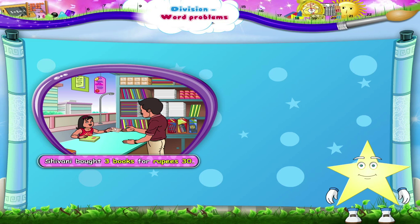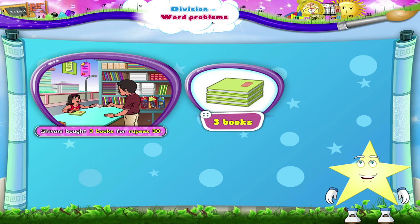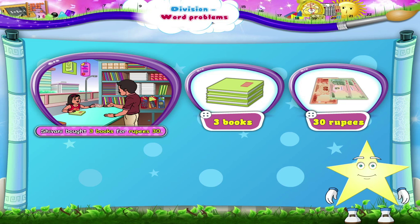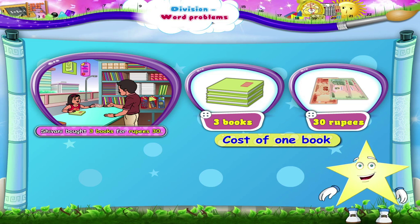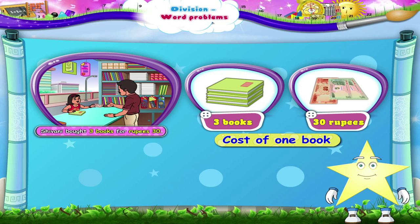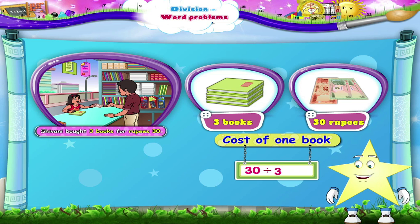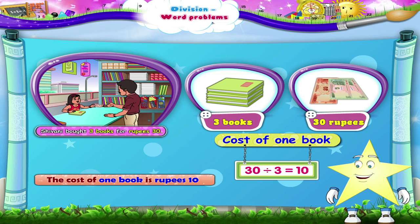Starry! First tell me, what is given in this problem? It is given that the cost of 3 books is Rs. 30. What do we have to find? We have to find the cost of one book. So we shall divide 30 by 3. 30 divided by 3 is equal to 10. So we can say that the cost of one book is Rs. 10.